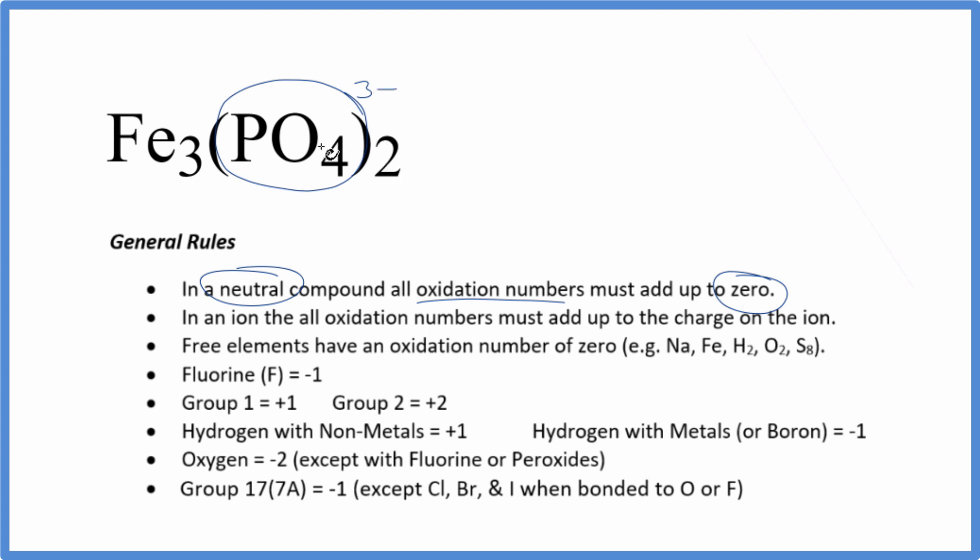We have two phosphate ions. Everything's going to add up to zero, but for the ion, the oxidation numbers are going to add up to the charge on the ion. So if the charge is three minus, two times three minus gives us minus six. All of these oxidation numbers add up to minus six.